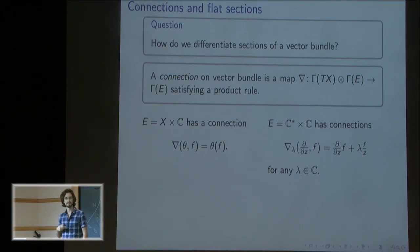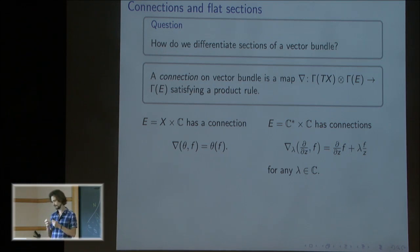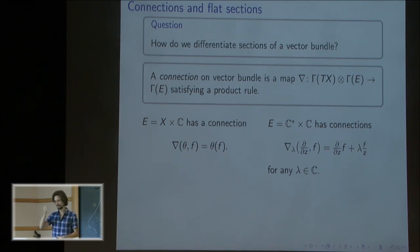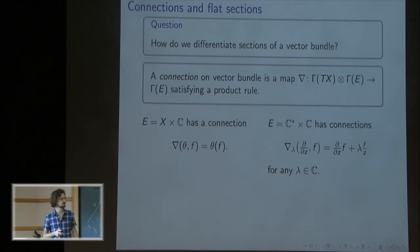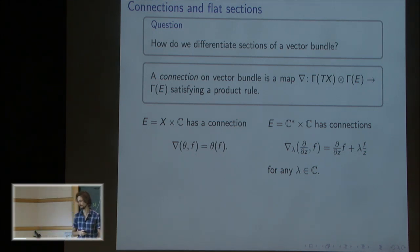You can get much more examples. If you take your space to be just the punctured complex plane C* and take the trivial bundle over that, you can get lots of twisted connections. You take your usual differentiation and add the term λf/z for any fixed λ, and you get a new twisted connection.